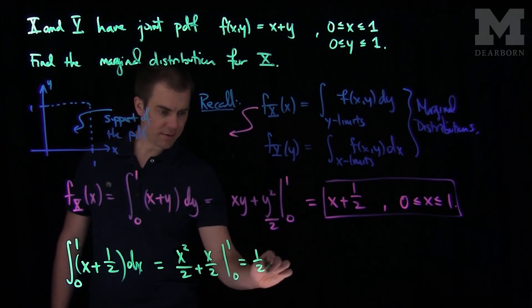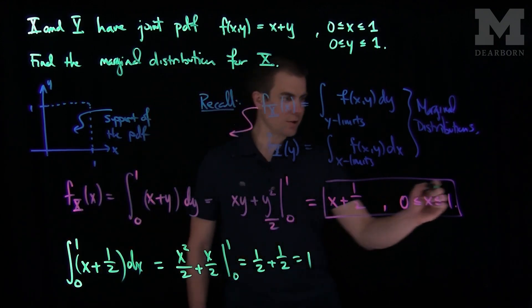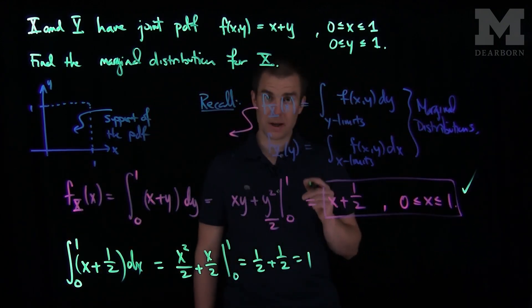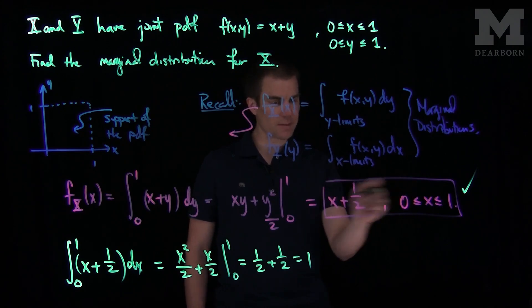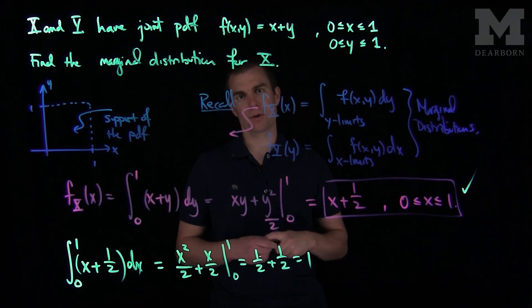And that's 1/2 plus 1/2, and that's 1. Indeed, this function defines a pdf. It integrates to 1 and is positive on this region. Therefore, this is a valid marginal distribution.